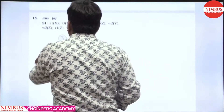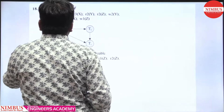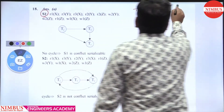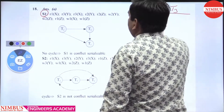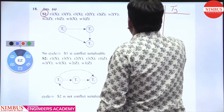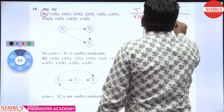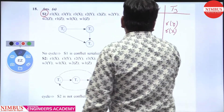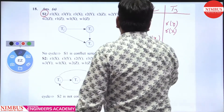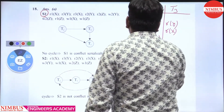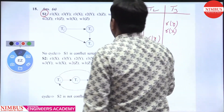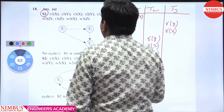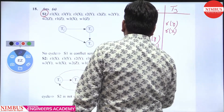Let's discuss S1 first. The schedule S1 has transactions T1, T2, T3 with the following operations in time order: R1(X), read Y, read X, read Y, read Z, write Y, write Z, read Z, write X, and write Z.